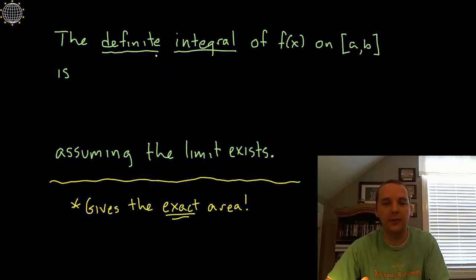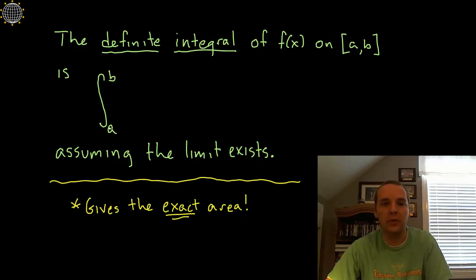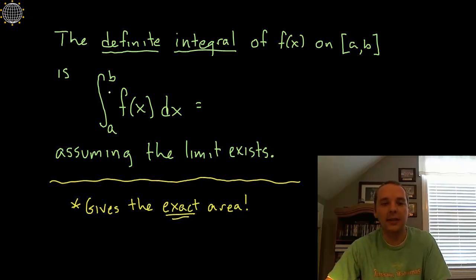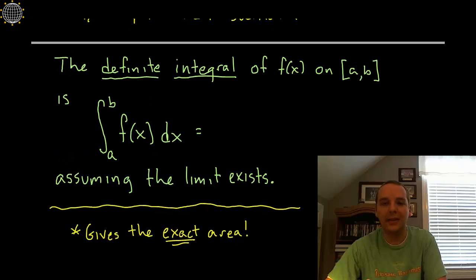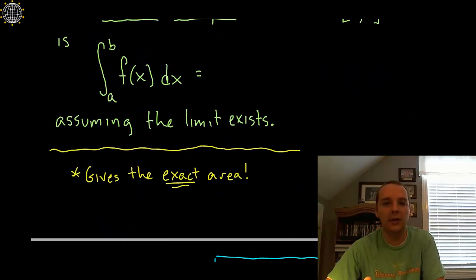I've partially filled out this definition to speed things along. The definite integral of a function on an interval from A to B is defined with a tall S — called an integral symbol — from A to B. These are called your limits of integration, of F of X, DX. This symbol notation means the exact area under the curve from A to B under the function F of X. That's what this notation is standing for.